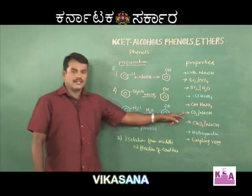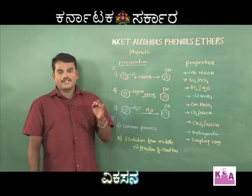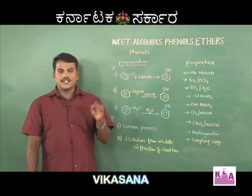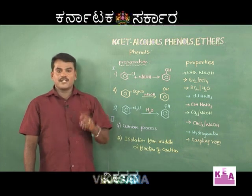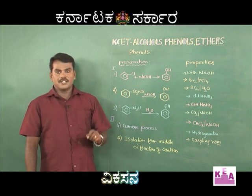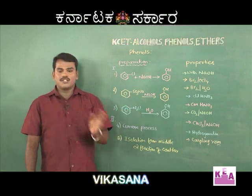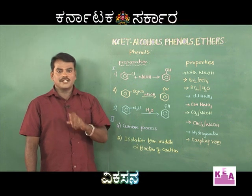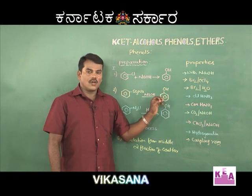The next reaction is reaction with carbon dioxide in the presence of NaOH. When phenol or sodium phenate is treated with carbon dioxide in the presence of NaOH under 6 to 7 atmospheric pressure at a temperature of 140 degrees Celsius, you get sodium salicylate, which upon acidification gives salicylic acid. This is a named reaction called the Kolbe reaction.